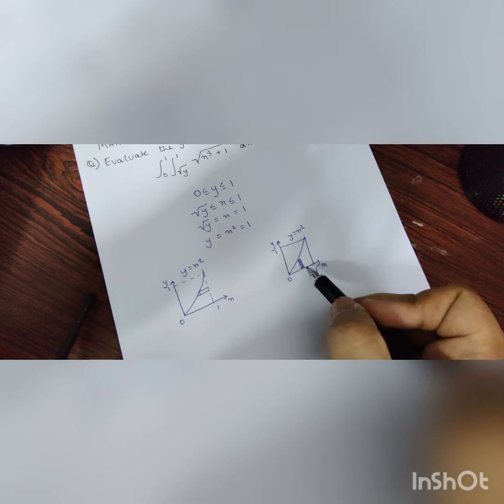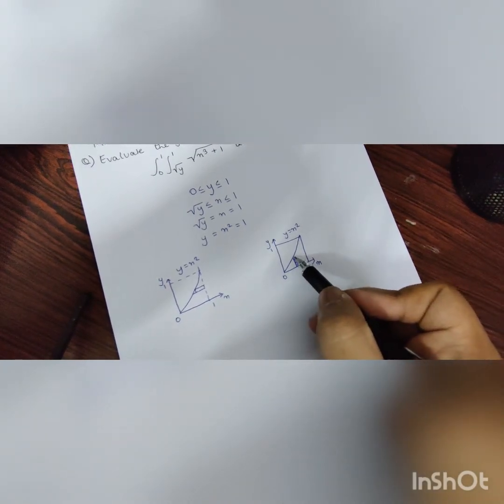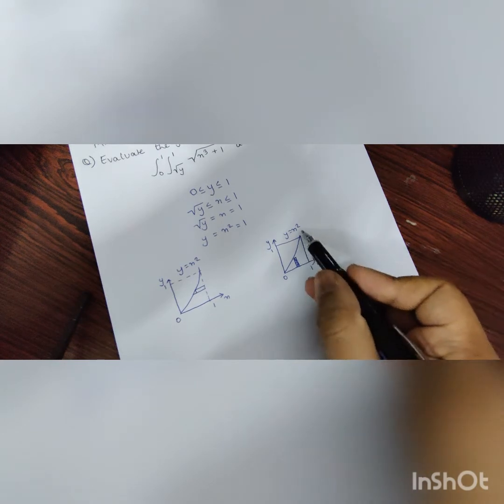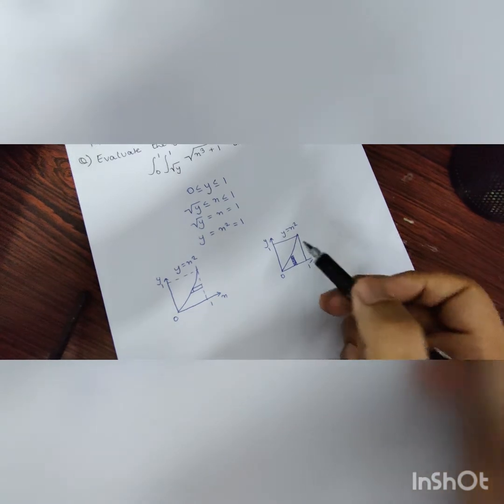However, over here we know that the lower limit will be 0 and the value of x squared as this is a curve for y is equal to x squared.